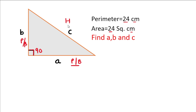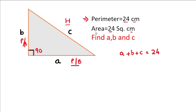From the question we have the perimeter, which is the sum of all sides: a plus b plus c equals 24 centimeters. And since it's a right angle triangle, we can also use the area formula.